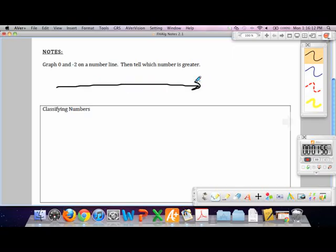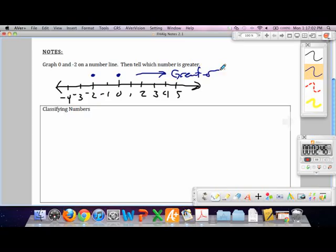If you draw a number line, just make a sketch of one. Draw yourself a number line. And we'll compare 0 and negative 2. So, 0 should go like right here. Negative 2 goes right here. Which one of those two numbers is greater? Zero. How do you know? Because it's closer to the right side. Yeah, it's closer to the right side of the number line. Numbers farther to the right are greater.